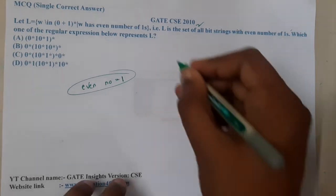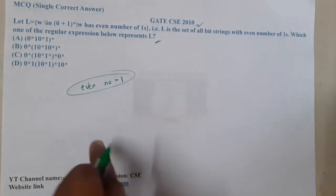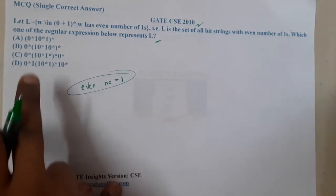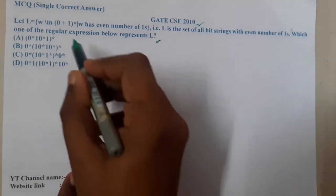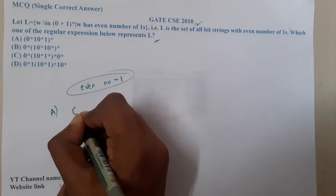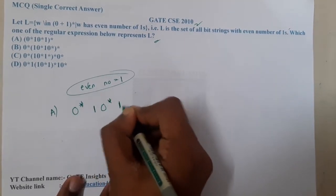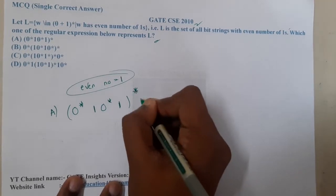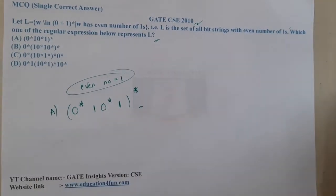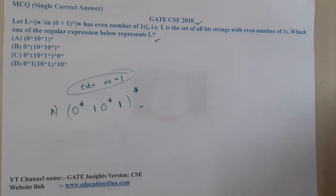Which of the following regular expressions represents L? Now our goal is to generate even number of ones from this. Let us start with option A. Given option A is 0*10*1)*. To be clear, they are saying even number of ones, so this string will only generate even number of ones.